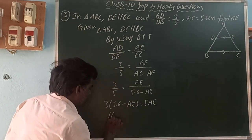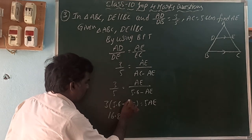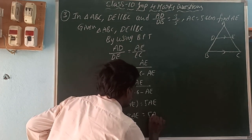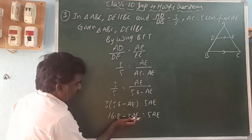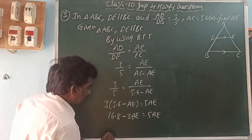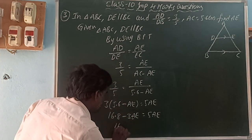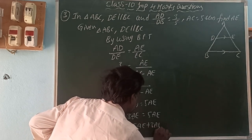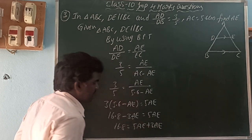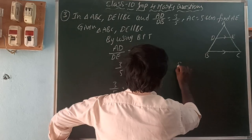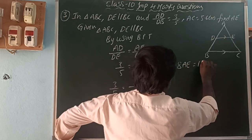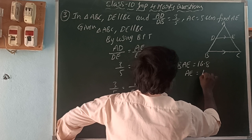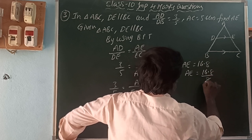So 16.8 equals 3·AE on one side and 5·AE on the other. Bringing like terms together: 16.8 = 5AE + 3AE = 8AE. Therefore AE = 16.8 divided by 8.